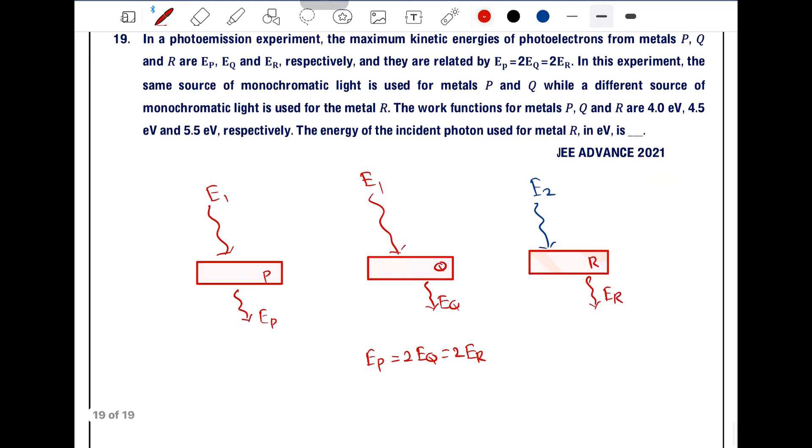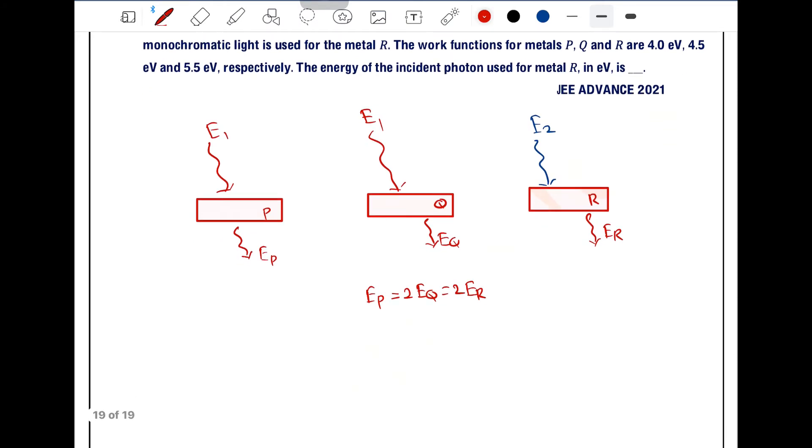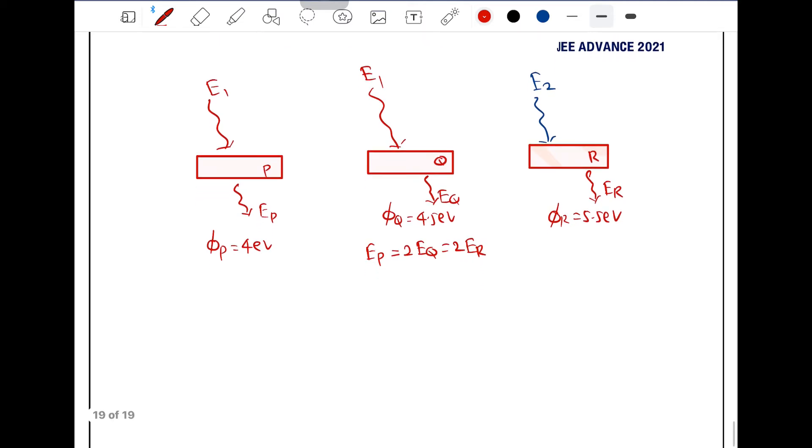Now next is the work function for metal P, Q, R: 4, 4.5 and 5.5. The work function for φP is equal to 4 eV, φQ is equal to 4.5 eV and φR is equal to 5.5 eV. The energy of incident photon used for metal in electron volt is, right?